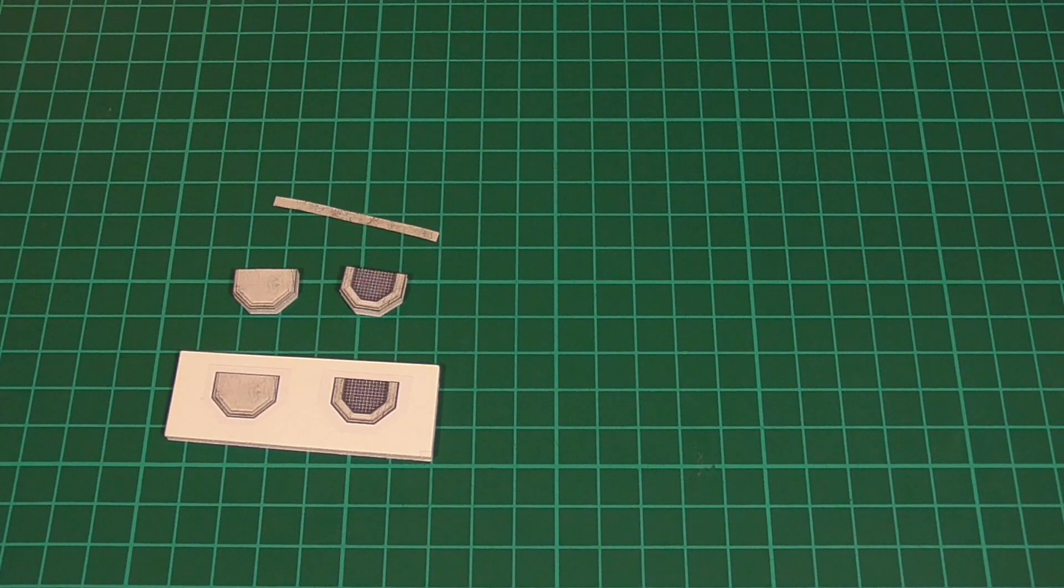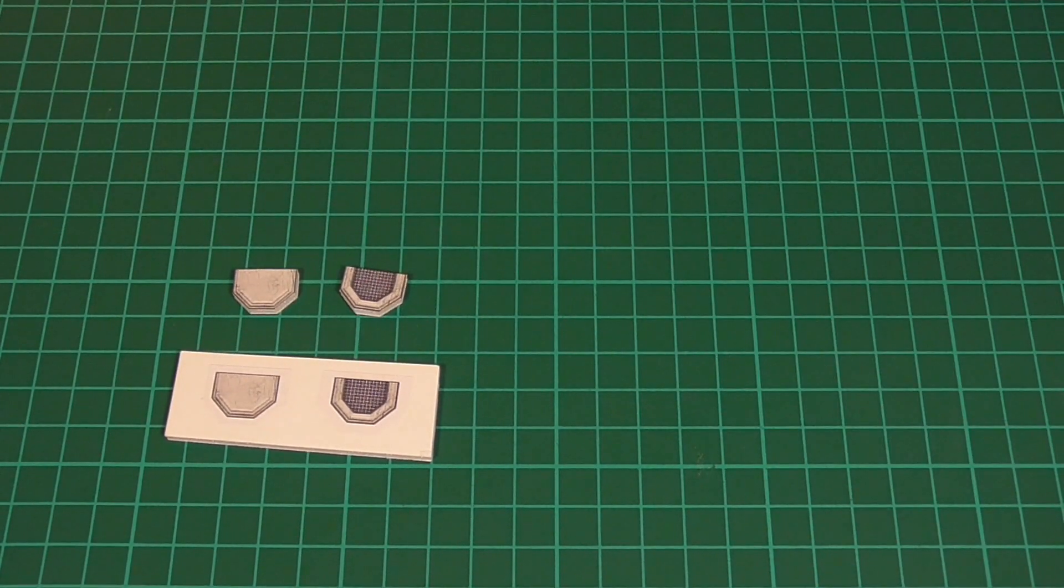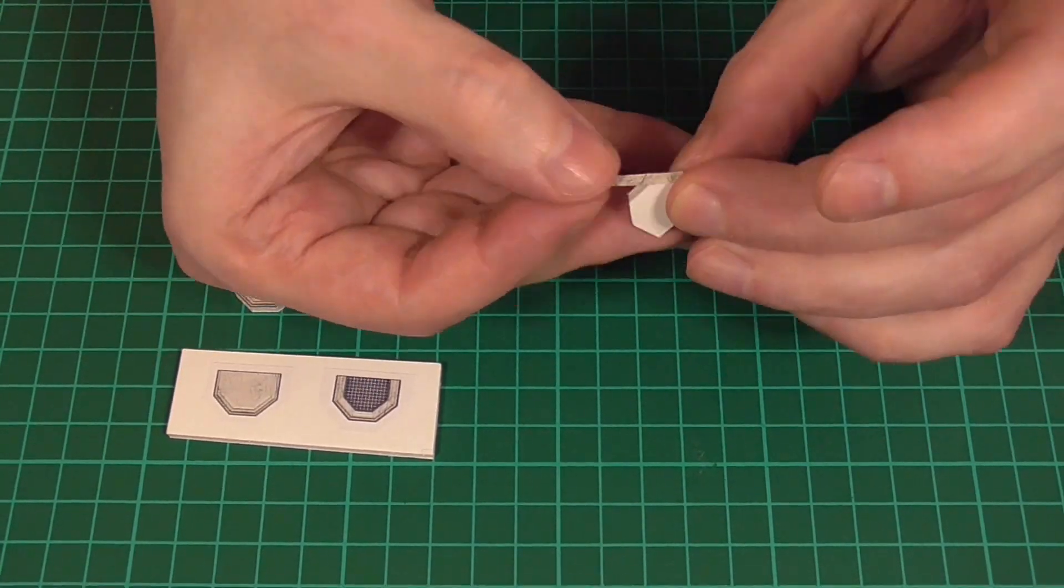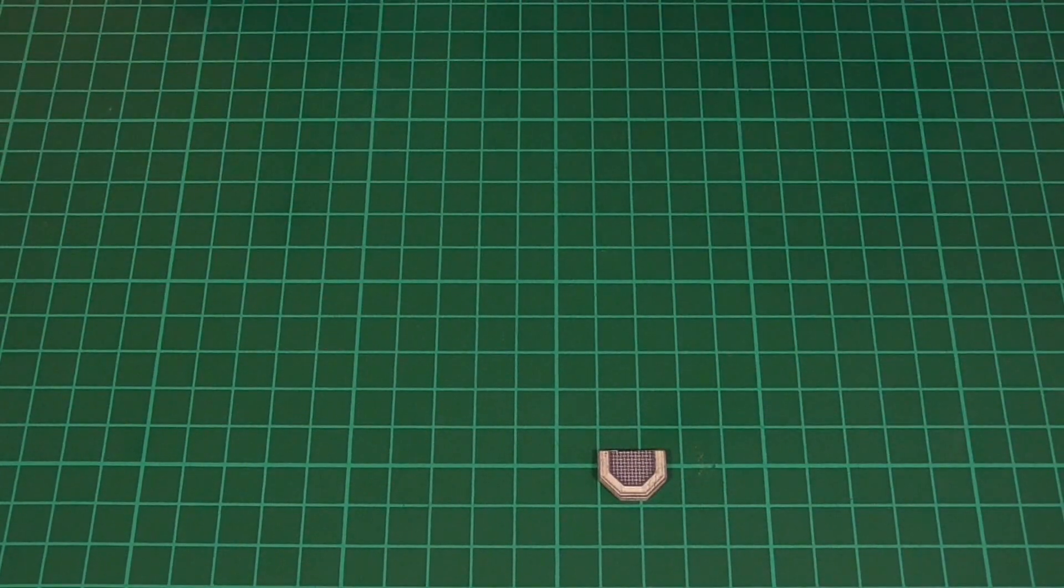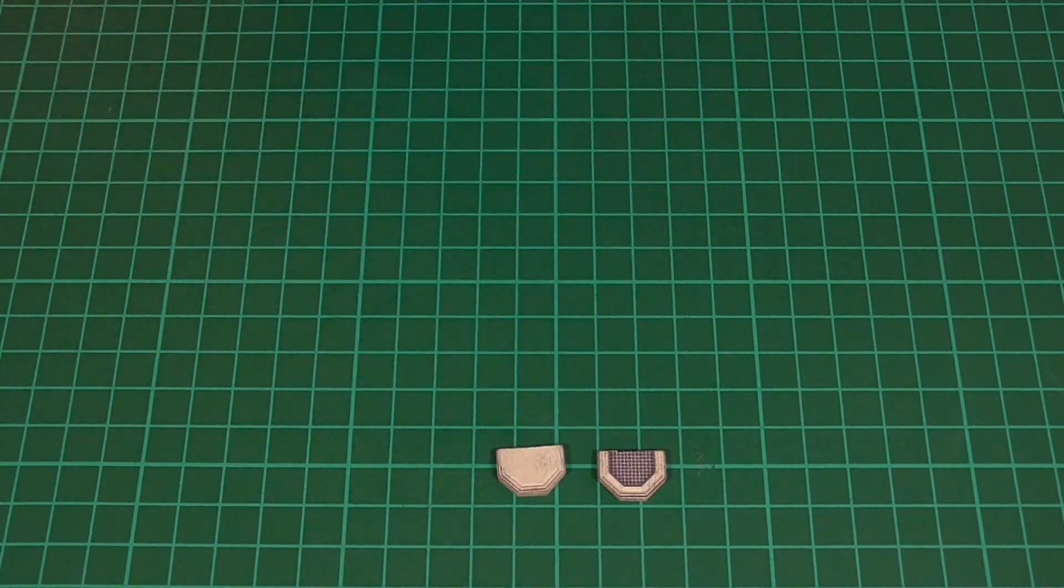Next we'll cut a strip of the plain stone texture that's the same thickness as the foam core. Then we'll apply some glue to the back and simply wrap that around the edge to cover the exposed foam. That should result in this kind of thing, and we'll need to do that to both pieces.